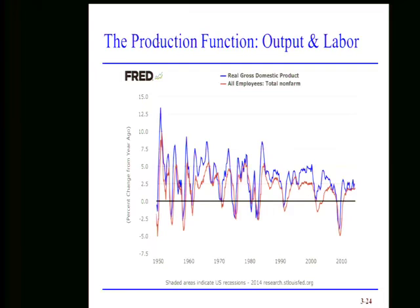The growth rate of real gross domestic product and employment are highly correlated. Change the number of employees, you're going to change the amount of output. It's not a perfect correlation, because changes do occur in the capital stock and in total factor productivity. So we wouldn't anticipate a correlation coefficient of one, but the correlation coefficient is around 0.9.